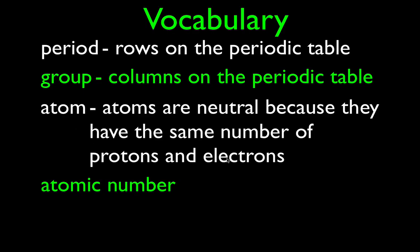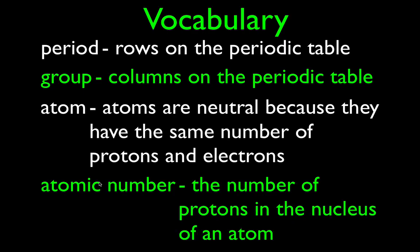Protons are positively charged. Electrons are negatively charged. If you have the same number of protons — 10 protons plus 10 negatively charged electrons — if you add plus 10 and minus 10 you get zero. The atomic number is the number of protons in the nucleus of an atom. That is the thing that identifies what kind of atom it is, what element it is. That's why it's called the atomic number.